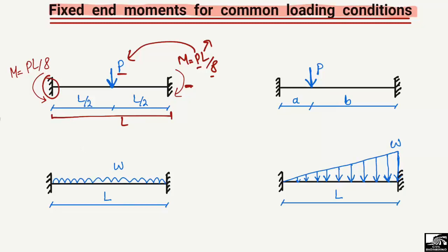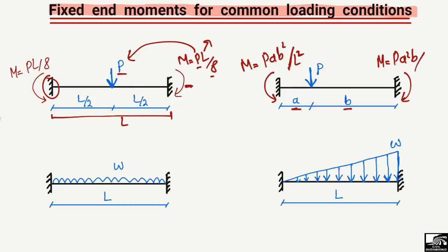When the load is acting at a distance of a from the left end and a distance of b from the right end — when the load is not acting at the midpoint — the moment value changes. The moment at the left support will be equal to Pab² divided by L², and the moment at the right support will be equal to Pa²b divided by L².